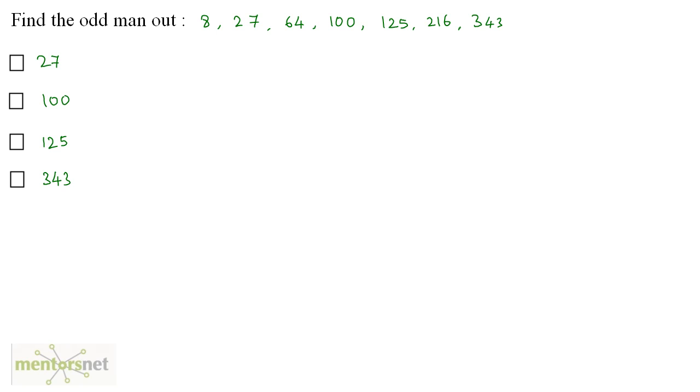Let's solve the next question. This series seems to be a pattern of cubes. So 8 can be written as 2 cube. 27 is 3 cube. 64 is 4 cube. But 100 cannot be written in terms of cubes because it is not a perfect cube. 125 is 5 cube, 216 is 6 cube and 343 is 7 cube. So the odd man out is 100.